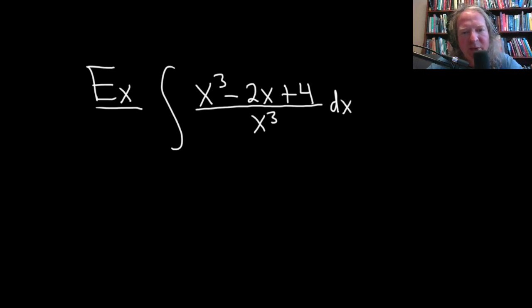Okay, let's integrate this. We have the integral of x cubed minus 2x plus 4, all divided by x cubed. So we have a fraction. Let's go ahead and try to work through its solution.